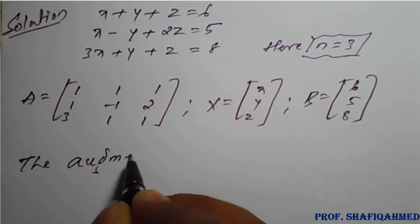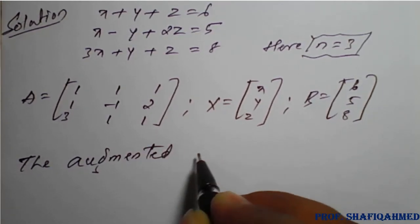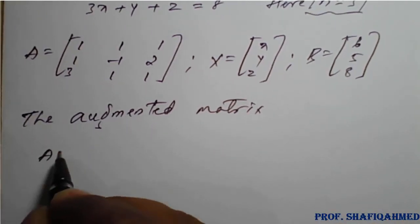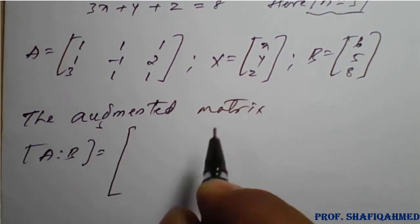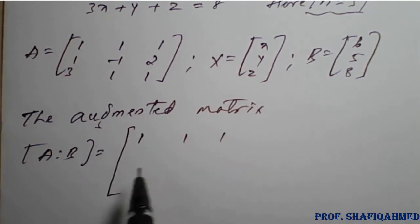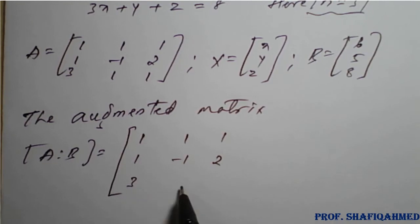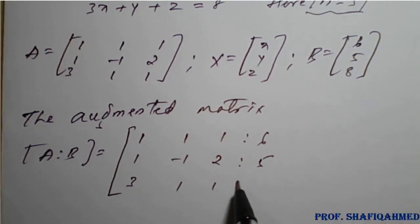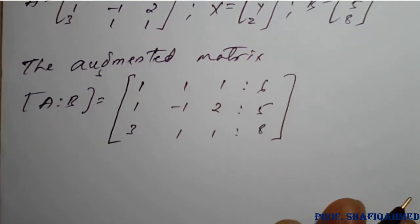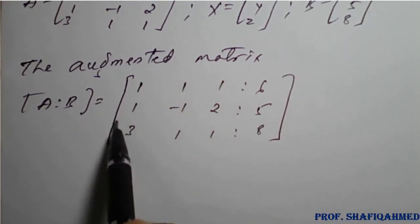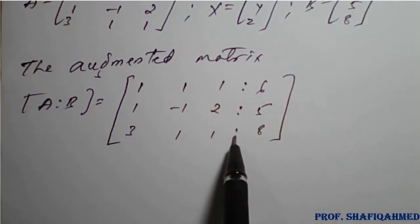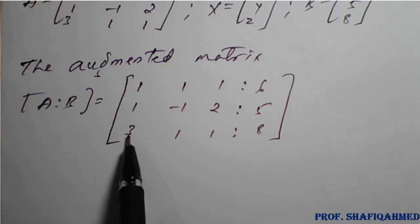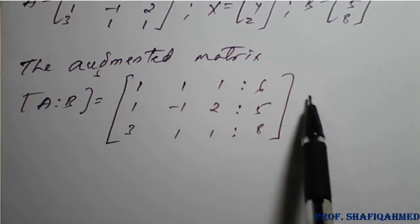Now we form the augmented matrix [A|B]. The augmented matrix AB is written as: rows 1, 1, 1 | 6; then 1, minus 1, 2 | 5; then 3, 1, 1 | 8. The left portion is matrix A, and the complete matrix is the augmented matrix AB. We need to apply Echelon form to this augmented matrix.